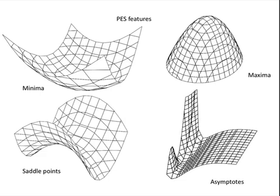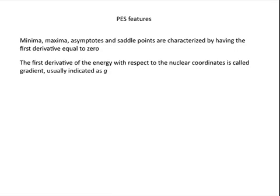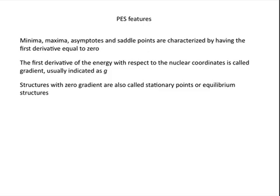All these four features share a common characteristic. In fact, all of them are characterized by having the first derivative equal to zero. The first derivative of the energy with respect to the nuclear coordinates is called the gradient and is usually indicated as G. Structures with zero gradients are called stationary points or equilibrium structures.